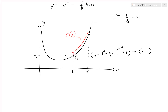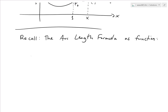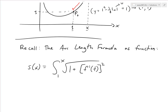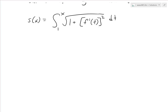We'll call it S of x. Recalling the arc length formula as a function: S of x equals the integral from 1 to x of square root of 1 plus the derivative of the function squared dt — we use variable t here so we don't have x twice. As I explained in my last video, this is just the variable of integration. So what this means is we need to find the derivative.